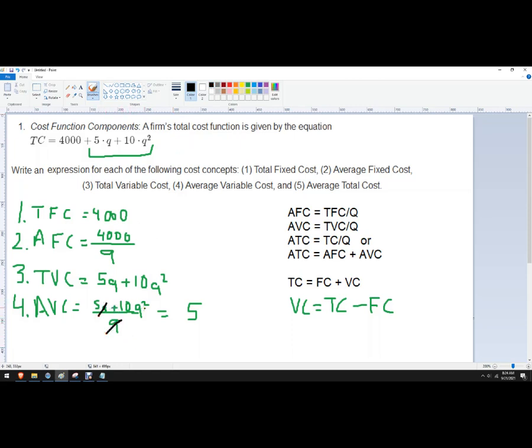And then I got to divide here. So the plus, plus 10Q. That's your average variable cost.